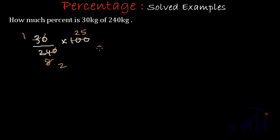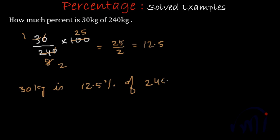4 25's are 100. And this will be equal to 25 by 2 which will be nothing but 12.5. So from here we get 30 kgs is 12.5% of 240 kgs, so this is the result.